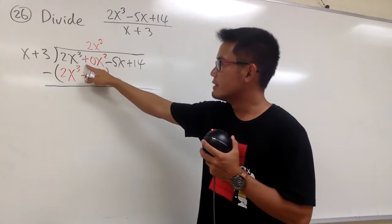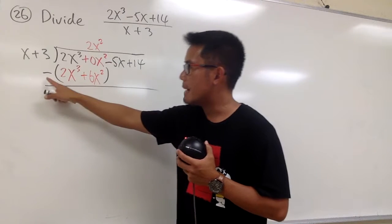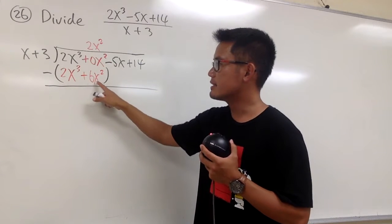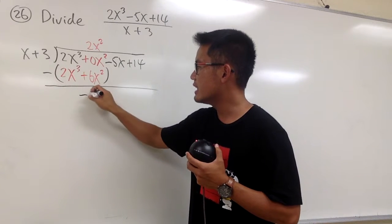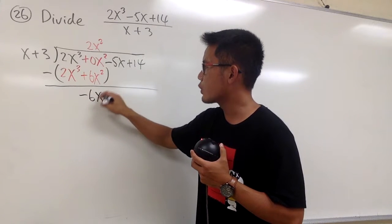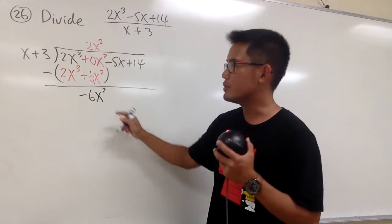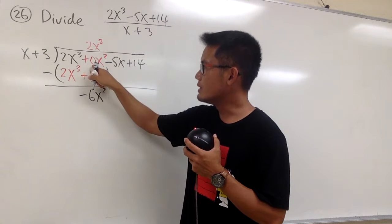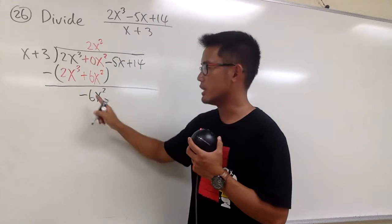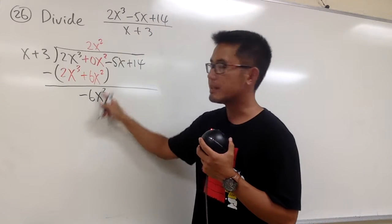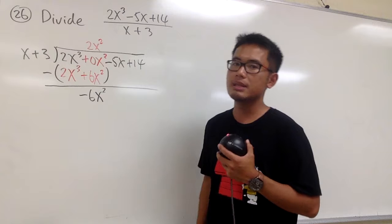Next, do this carefully. We have 0x squared minus a positive 6x squared. Here, 0 minus 6 is negative 6, and then we have the x squared term. Be sure you change the sign right here. Once again, it's because 0 minus 6, we get negative 6. And that was the x squared term, so keep it as how it is.